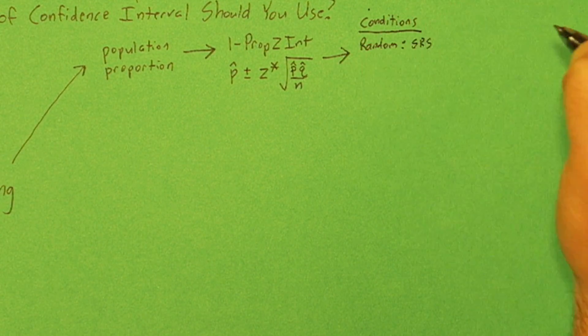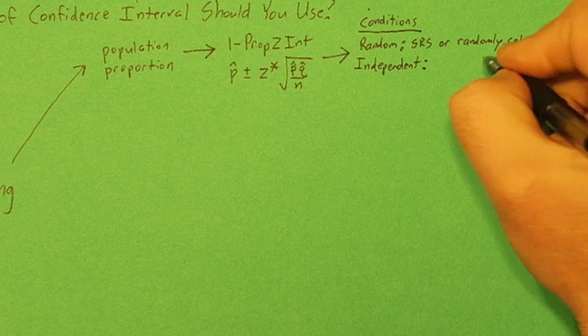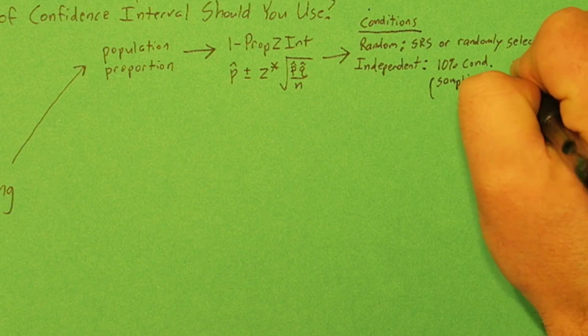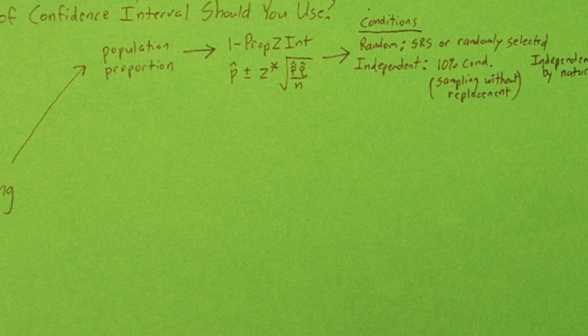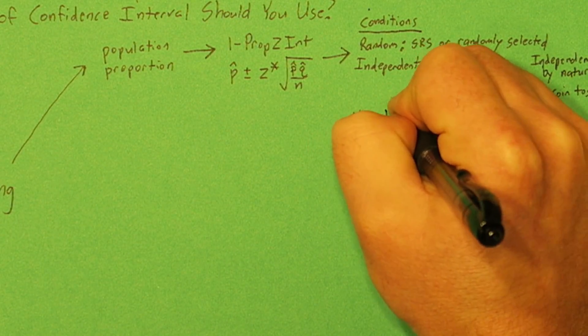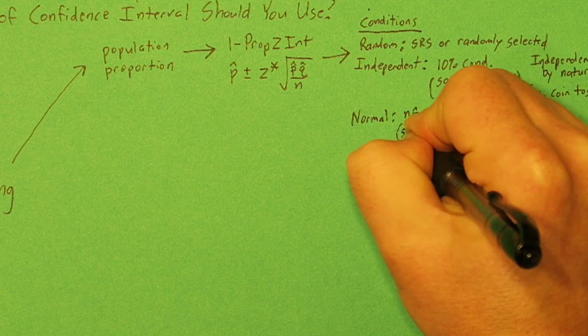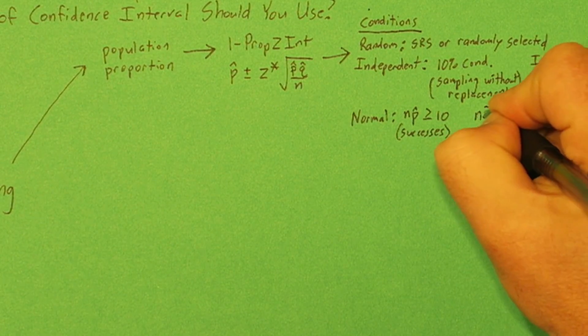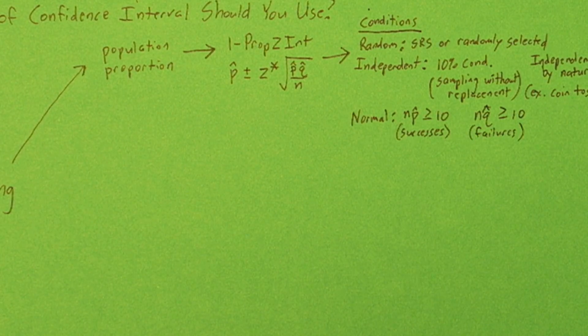First you have to check that the data is a random sample. Next you have to check independence. So if you're sampling without replacement, you need to check the 10% condition, or sometimes the data is just independent by nature, for example a coin toss. Finally, you need to check the normal condition. You have to check that np-hat is greater than or equal to 10, so that means you have at least 10 successes in your sample. And nq-hat is greater than or equal to 10, so you have to have at least 10 failures in your sample.